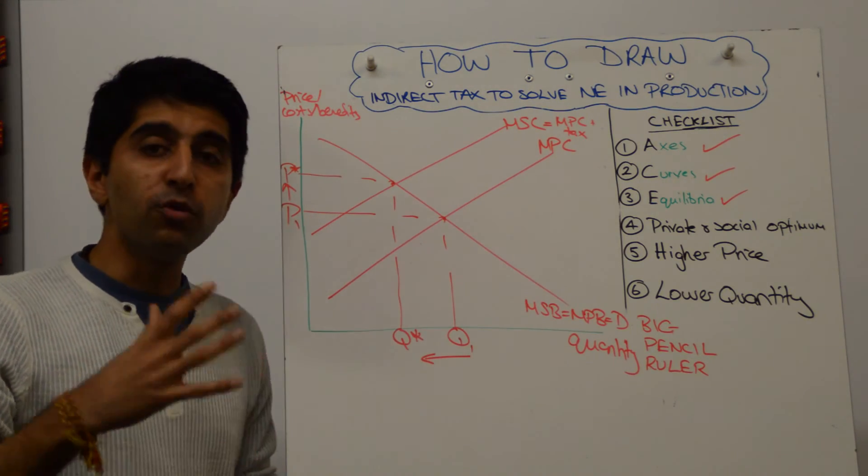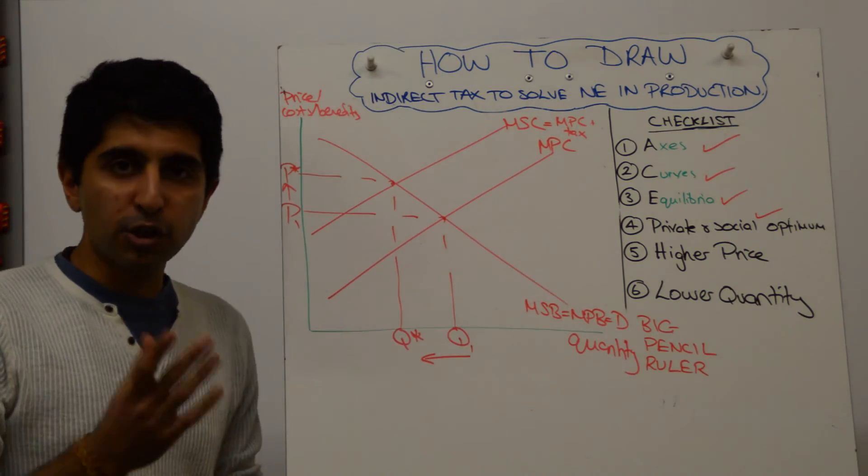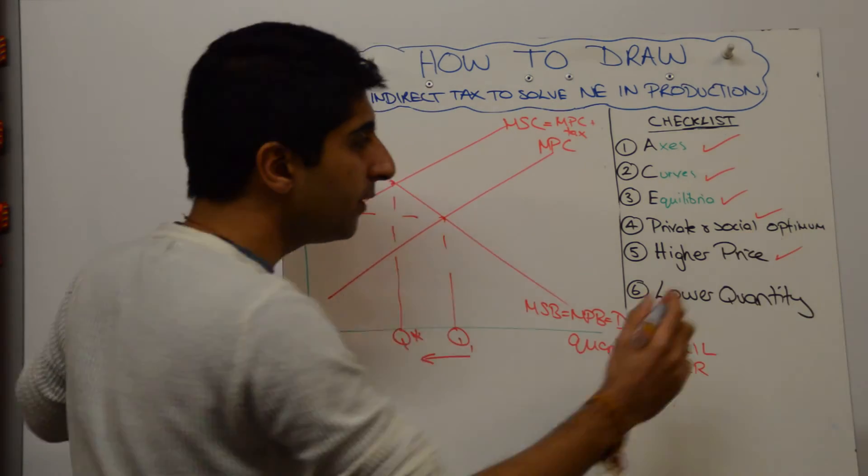Have we made it clear that there has been a movement from the private optimum to the social optimum? Yes, we have. We have made that very clear. Have we shown that the price has gone up from P1 to P star? We have made that clear because we've drawn this arrow.